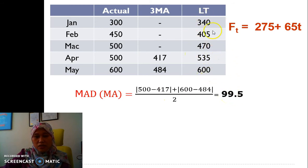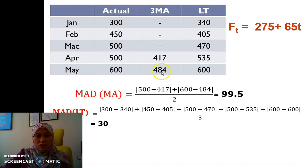For the linear trend, since we have the data since January, we have 1, 2, 3, 4, 5 absolute deviations for the error. So this is the first one: the actual 300 minus 340, and then we need to absolute deviation. And then we do for February, March, April, and May. Since they have 5 error data, we need to divide by 5, so we get 30.